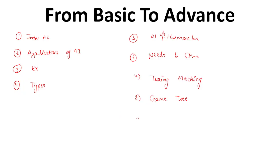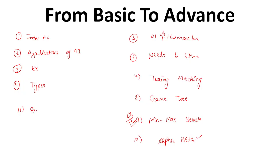Other than this, we have one more important topic — the min-max search algorithm, which is somehow related to your data structures and algorithms. Min-max search algorithm is also very important. The tenth important point will be your alpha-beta cutoff. Alpha-beta cutoff procedures are also very important. Next topic we have is expert systems in AI, where we will discuss its basic protocols, its working, and some numerical PYQs we will also cover in this particular topic.